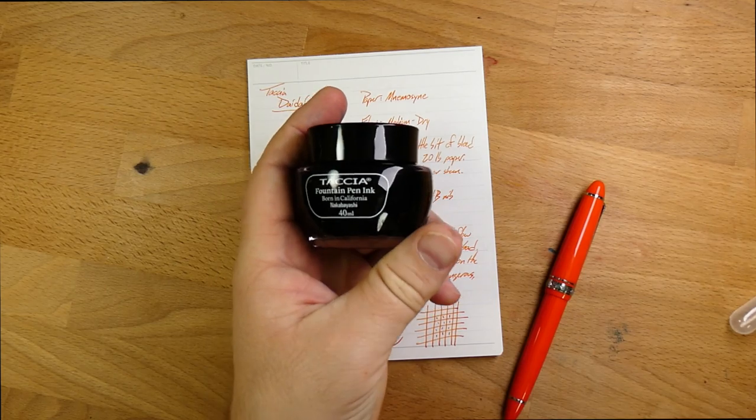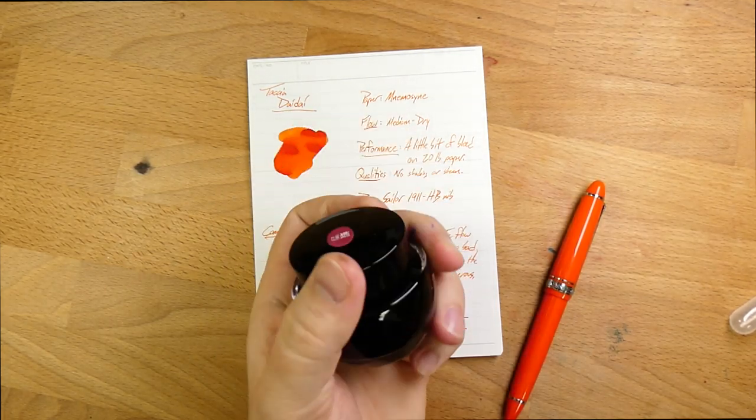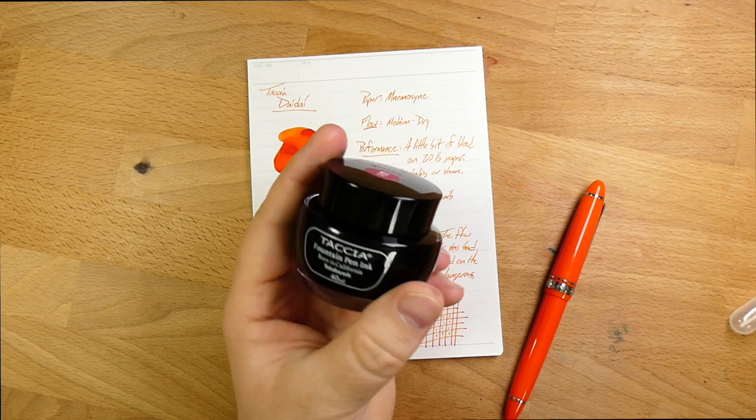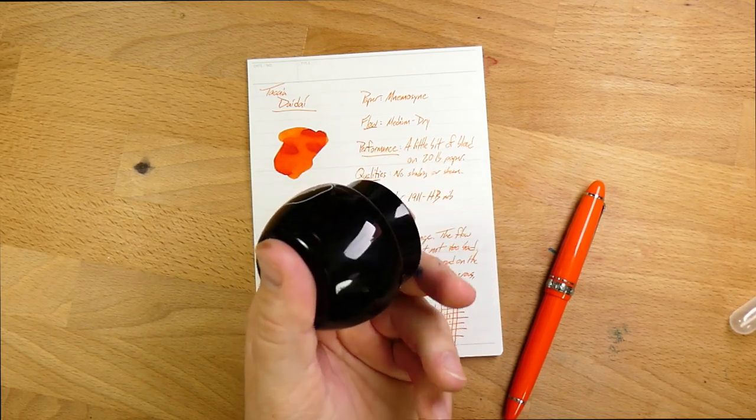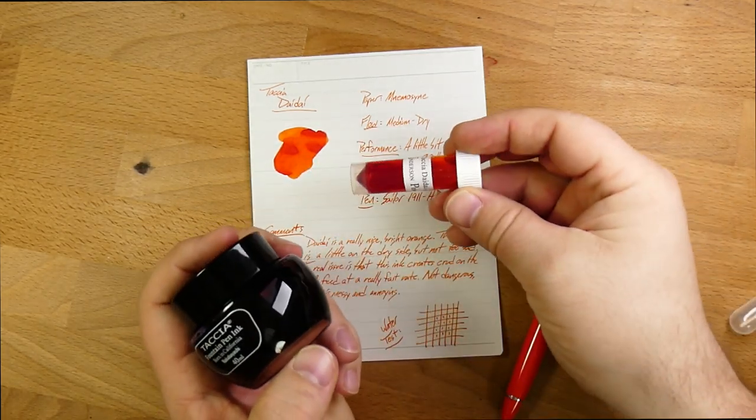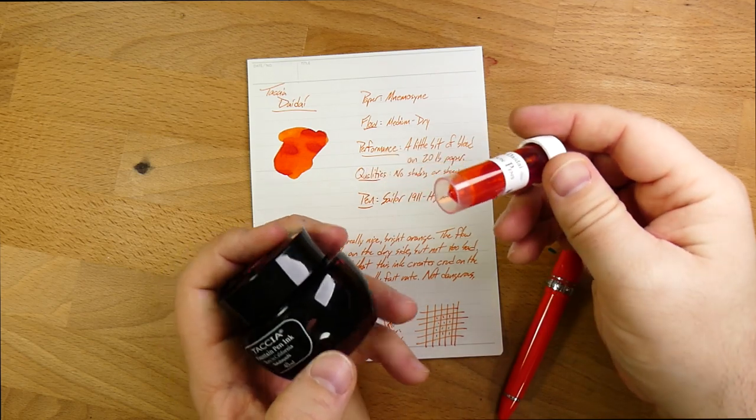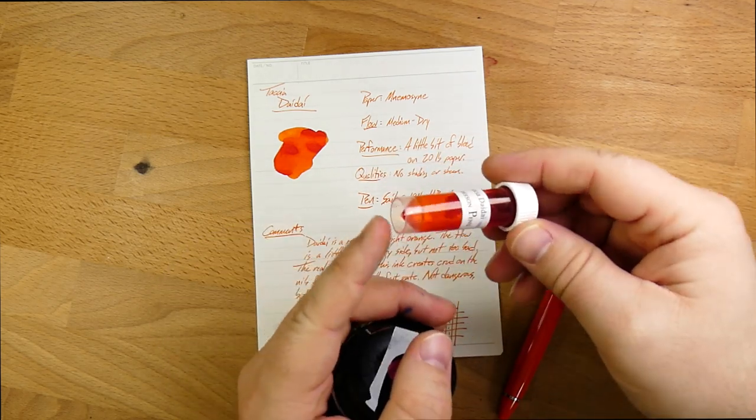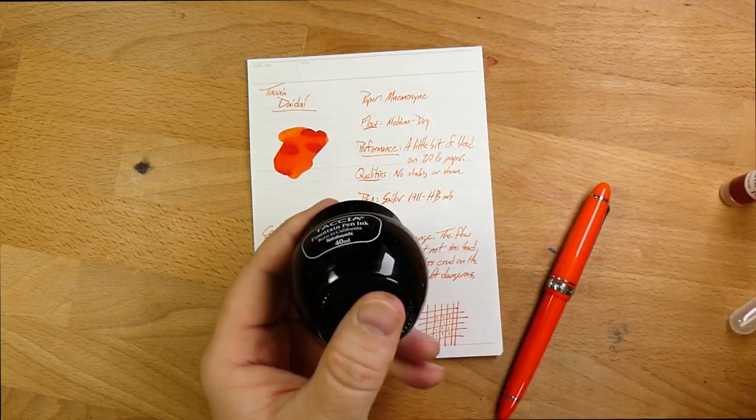These inks come in bottles at 40 mils. It's still a pretty good-sized bottle, a lot of fills, and they cost about 12 bucks. You can also get these 3 mil samples for a buck 75 at Anderson Pens. So go and check it out there.